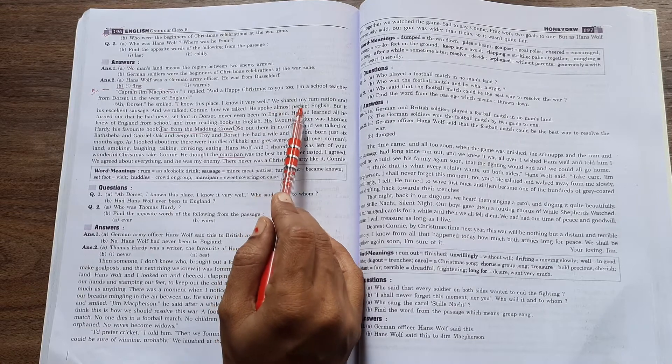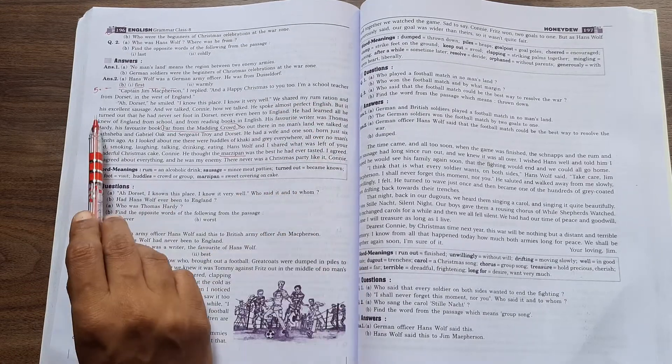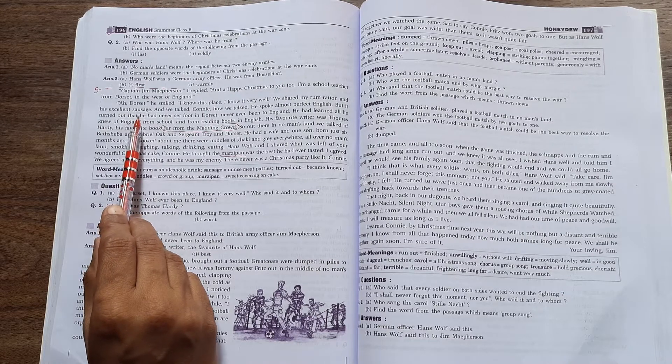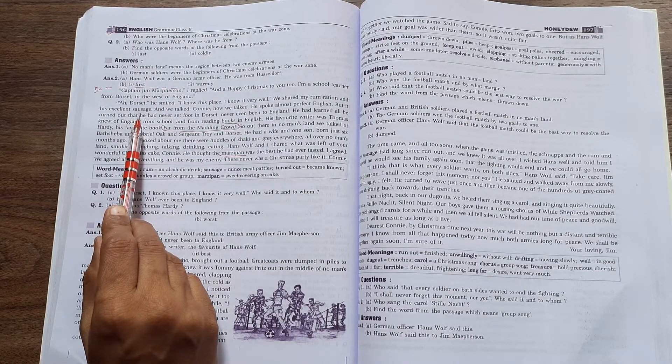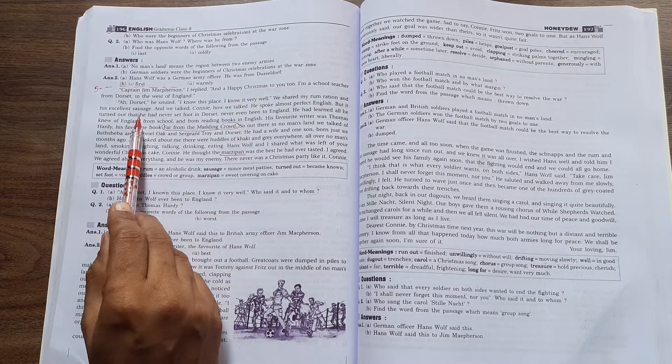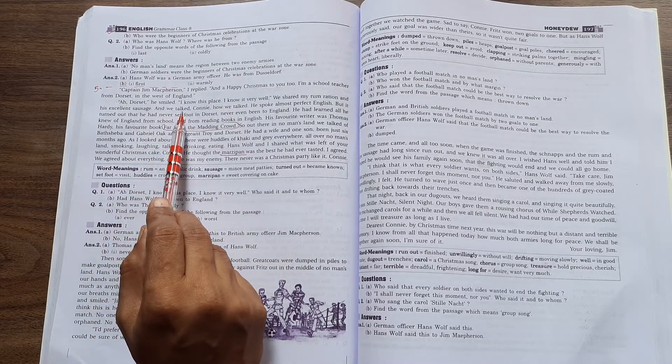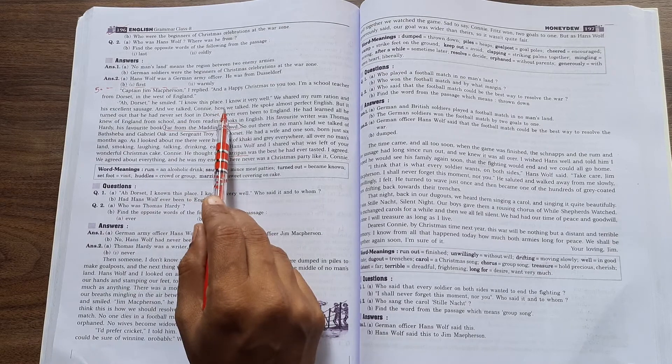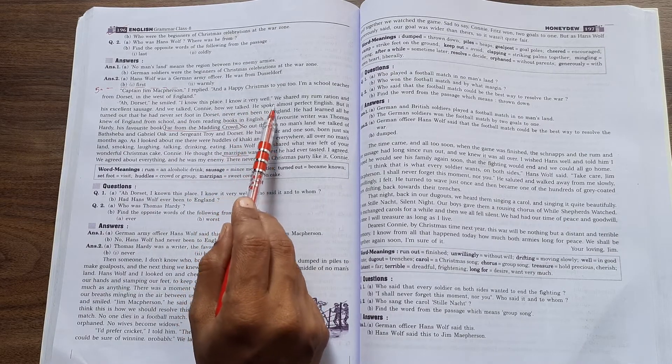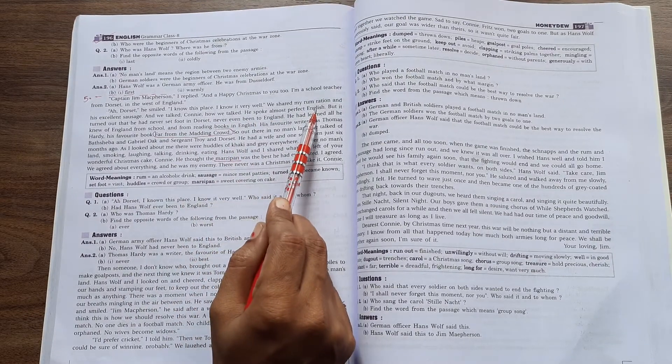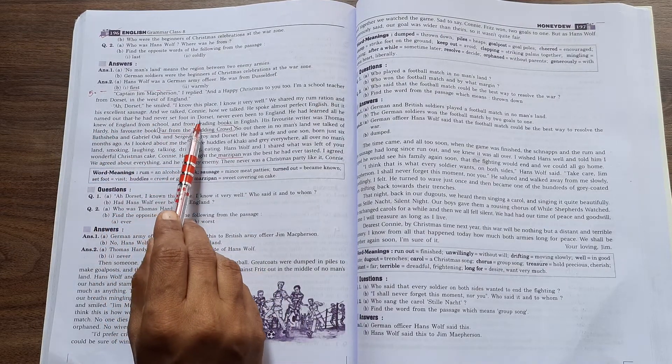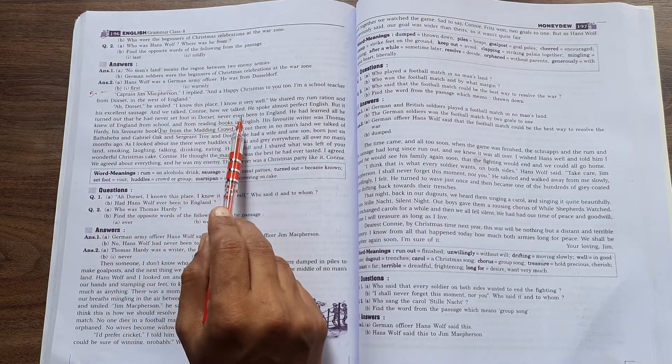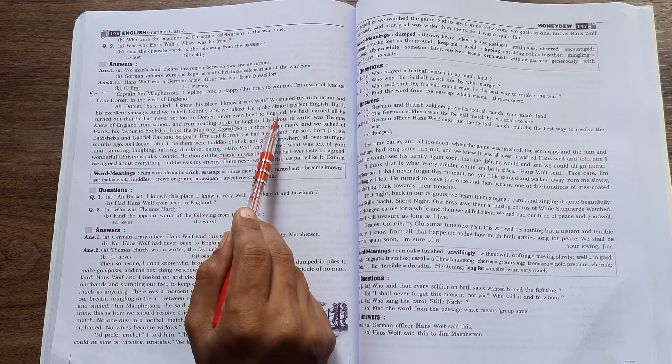We shared my rum ration and his excellent sausage. They had rum and sausage to eat and drink, so both were sharing with each other. And we talked. How we talked! He spoke almost perfect English, but it turned out that he had never set foot in Dorset, never even been to England.